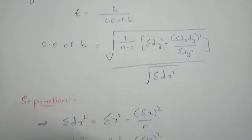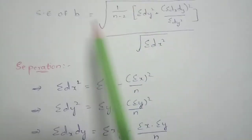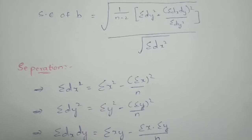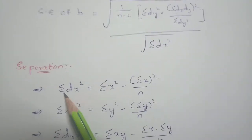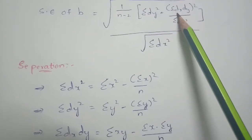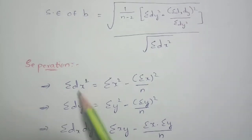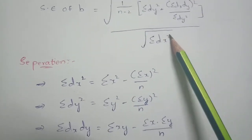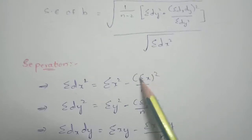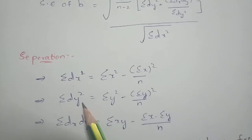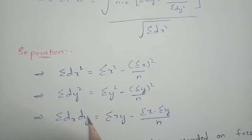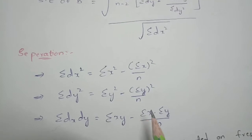Before entering the sum, you need to separately calculate: Sigma DX squared equals Sigma X squared minus (Sigma X whole squared divided by N); Sigma DY squared equals Sigma Y squared minus (Sigma Y whole squared divided by N); and Sigma DX·DY equals Sigma XY minus (Sigma X times Sigma Y divided by N).